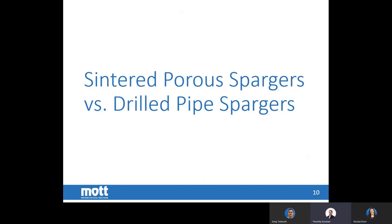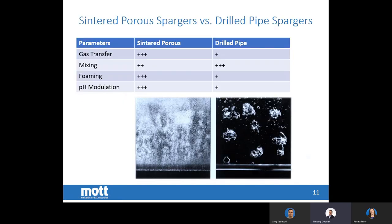Looking at the difference between a sintered porous sparger and a drilled pipe sparger: with the porous metal sparger, you produce many smaller bubbles which significantly increases the surface area. Comparing the sparger image to the drilled pipe, you can see much larger bubbles with the drilled pipe, so you will not get the same gas-to-liquid transfer efficiency. The drilled pipe does more for agitation, but it will also increase foaming and will not work as well for pH control.